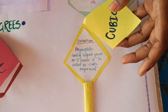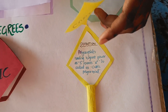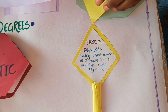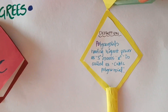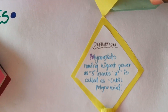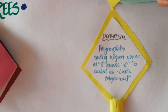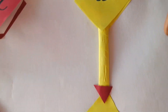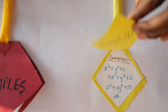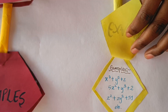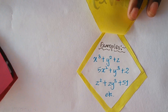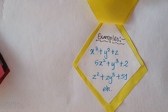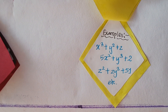Third is cubic polynomial. A polynomial of degree three is a cubic polynomial.